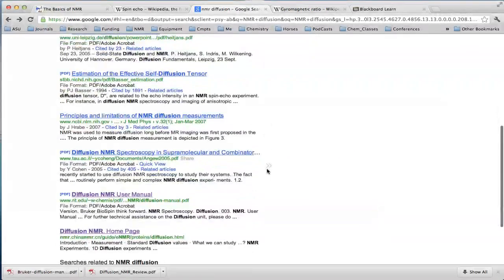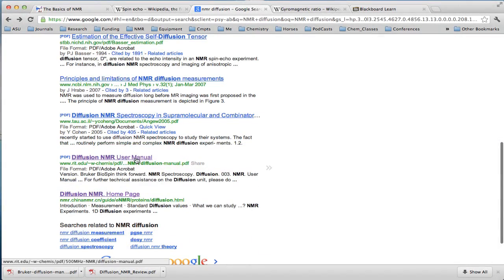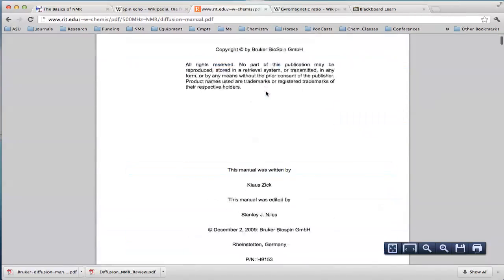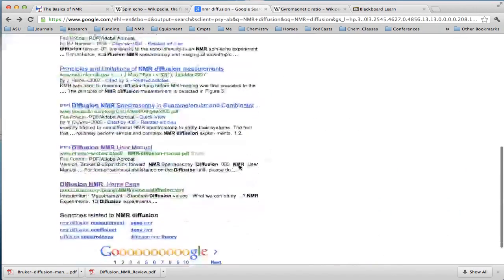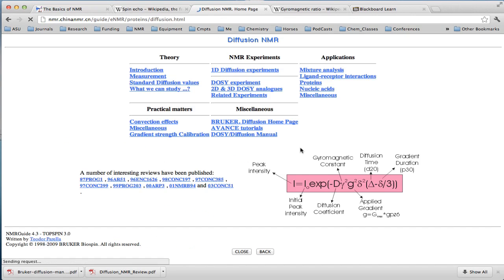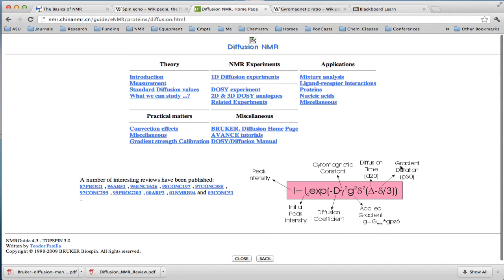And then another one I like is the manual for Bruker's Diffusion NMR gives a very nice example. And finally there's an NMR diffusion homepage again where they describe all the parameters that we just talked about.